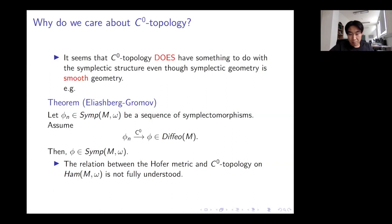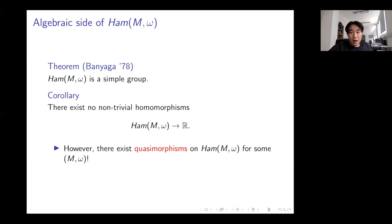The relation between the Hofer metric and C⁰ topology is not really understood — that's why we care about these two topologies. Regarding the algebraic structure of Ham, one of the first groundbreaking results is due to Banyaga, who proved that Ham is a simple group, which implies there are no non-trivial homomorphisms defined on Ham.